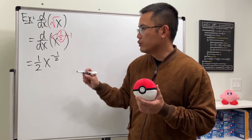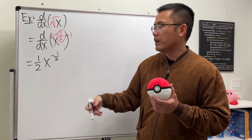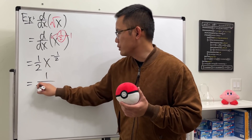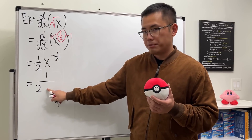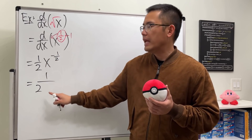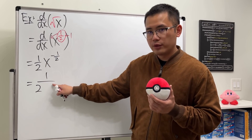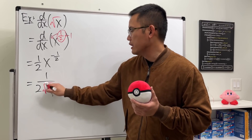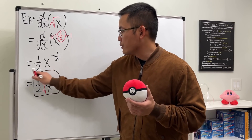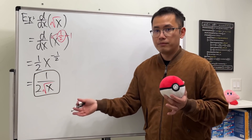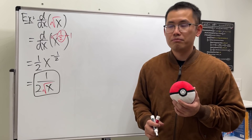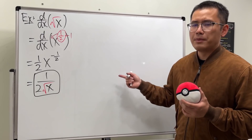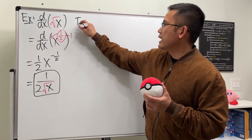We get one-over-two and x to the negative one-over-two power. Cleaning things up: one is still on top, we still have the two. Bring this down to the bottom and we get x to the positive one-over-two power, which is just the square root of x inside. Hopefully this is all clear.